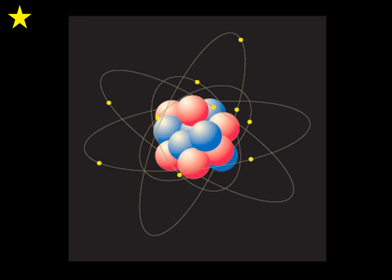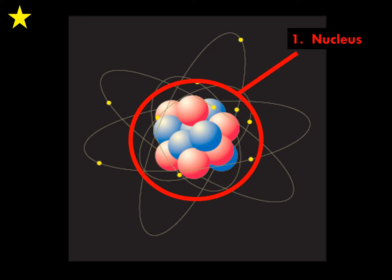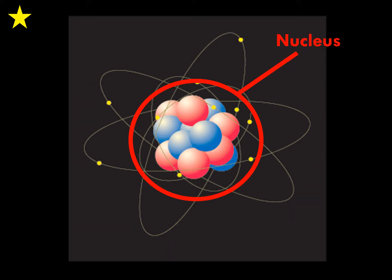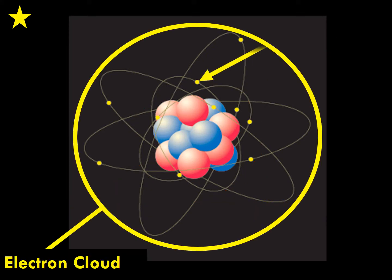The Bohr model is the simplest way we can talk about the atom. It's not the recognized theory at the moment, which is the orbital theory, but it helps us understand it a little bit better. In the center we have the nucleus, which is made up of the protons and neutrons, and then we have the electron cloud where electrons are located. In the nucleus you have protons that are positive and neutrons that are neutral, so they have a zero charge. And electrons are negative, giving you the balance between positive and negative.